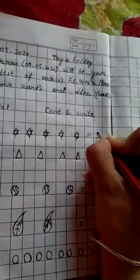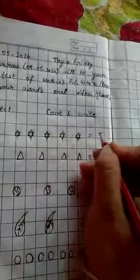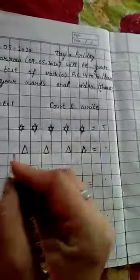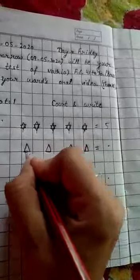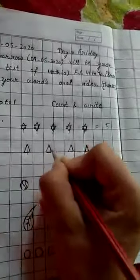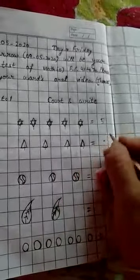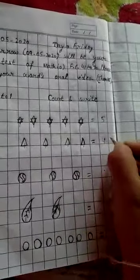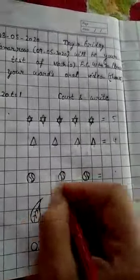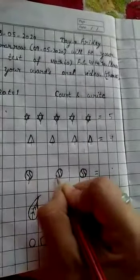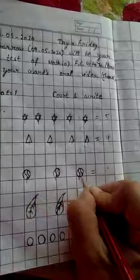So next is triangles. Count the shapes: 1, 2, 3, 4. Right here 4. Next balls: 1, 2, 3. How many?